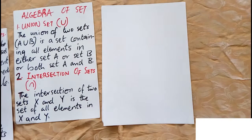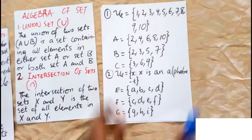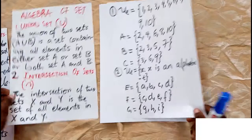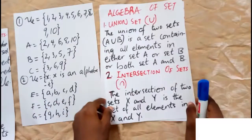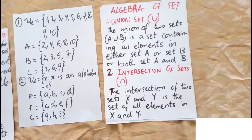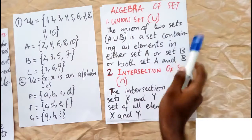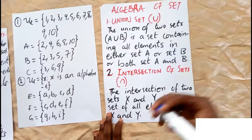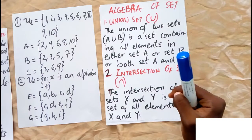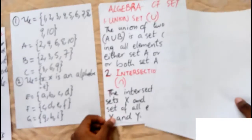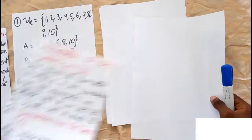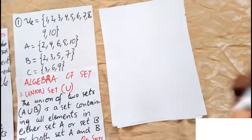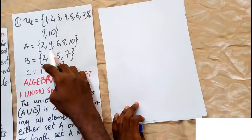Throughout this we'll be using examples to explain. The union of two sets A union B is a set containing all elements in either set A or set B or both. We'll use examples to better explain. If we have a universal set and set A equal to {2, 4, ...}.